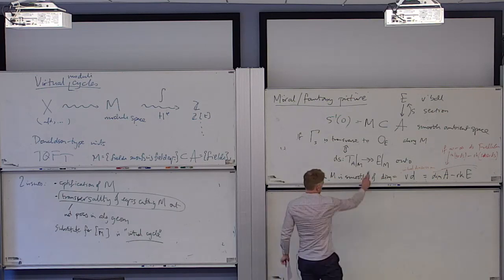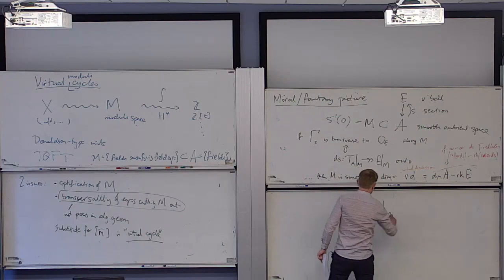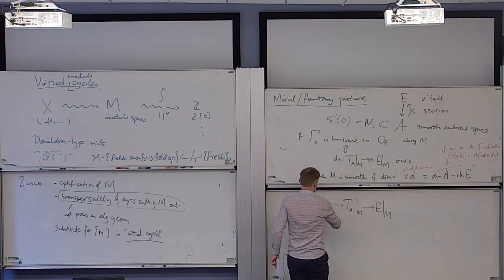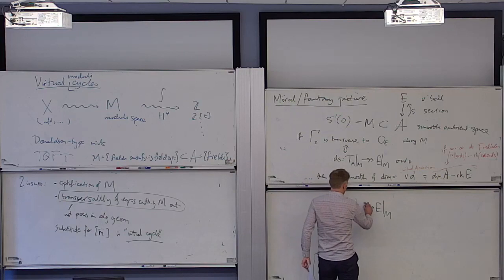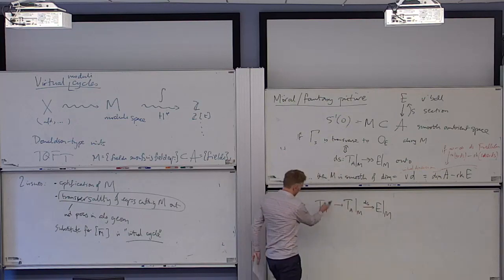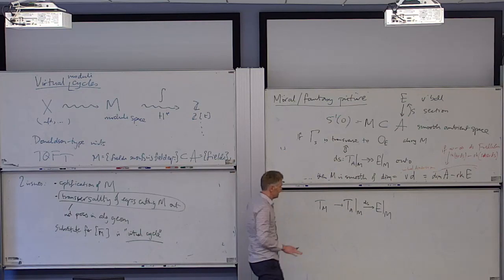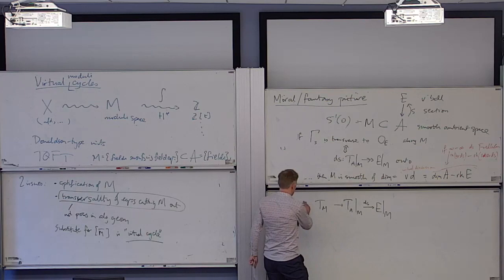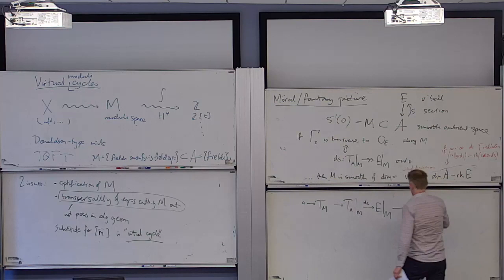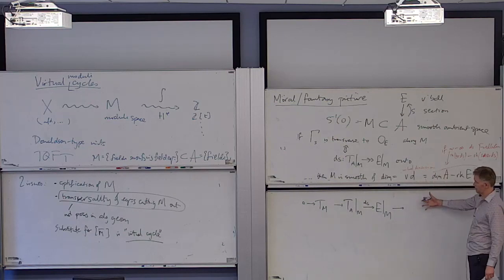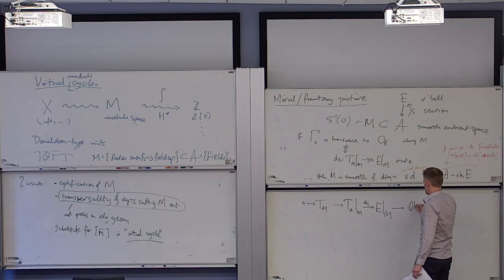In general, the kernel of DS is something like the tangent space to M. The rank of DS will be jumping around, so this tangent space might not be a vector bundle — its rank might jump from point to point, so you might get a sheaf. In general, we call the co-kernel of DS the obstruction space of M. This is the thing that's stopping your moduli space from being of the correct dimension: if this has rank R, then M will have dimension R too big.